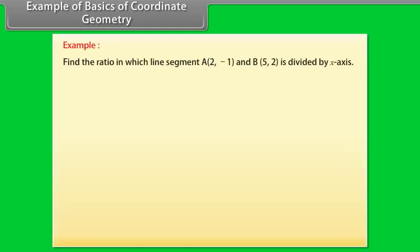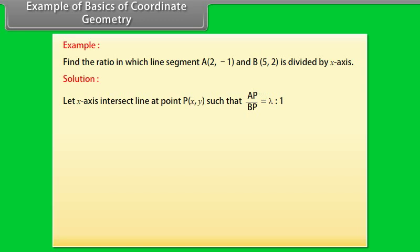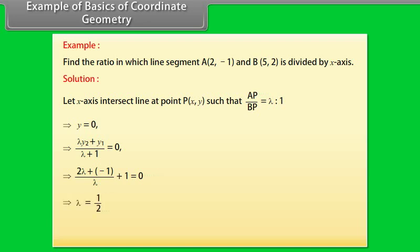Example: Find the ratio in which the line segment A(2, −1) and B(5, 2) is divided by the X-axis. Solution: Let the X-axis intersect the line at point P(X, 0) such that AP/BP = λ:1. It implies Y = 0, which gives 2λ + (−1) / (λ + 1) = 0, so λ = 1/2. Therefore AP:BP = 1:2.